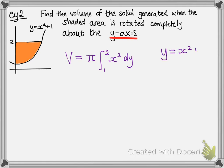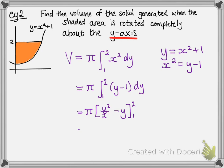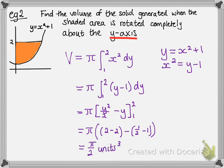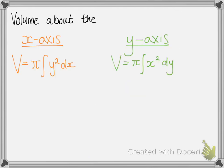We just need to work out what x² is in terms of y. Our original function was y = x² + 1, so rearranging gives x² = y − 1, and we substitute that into our integral. It works in exactly the same way as for x, we just have y's in that place instead. In summary: if you're rotating around the x-axis, volume = π∫y² dx; if you're rotating around the y-axis, volume = π∫x² dy.